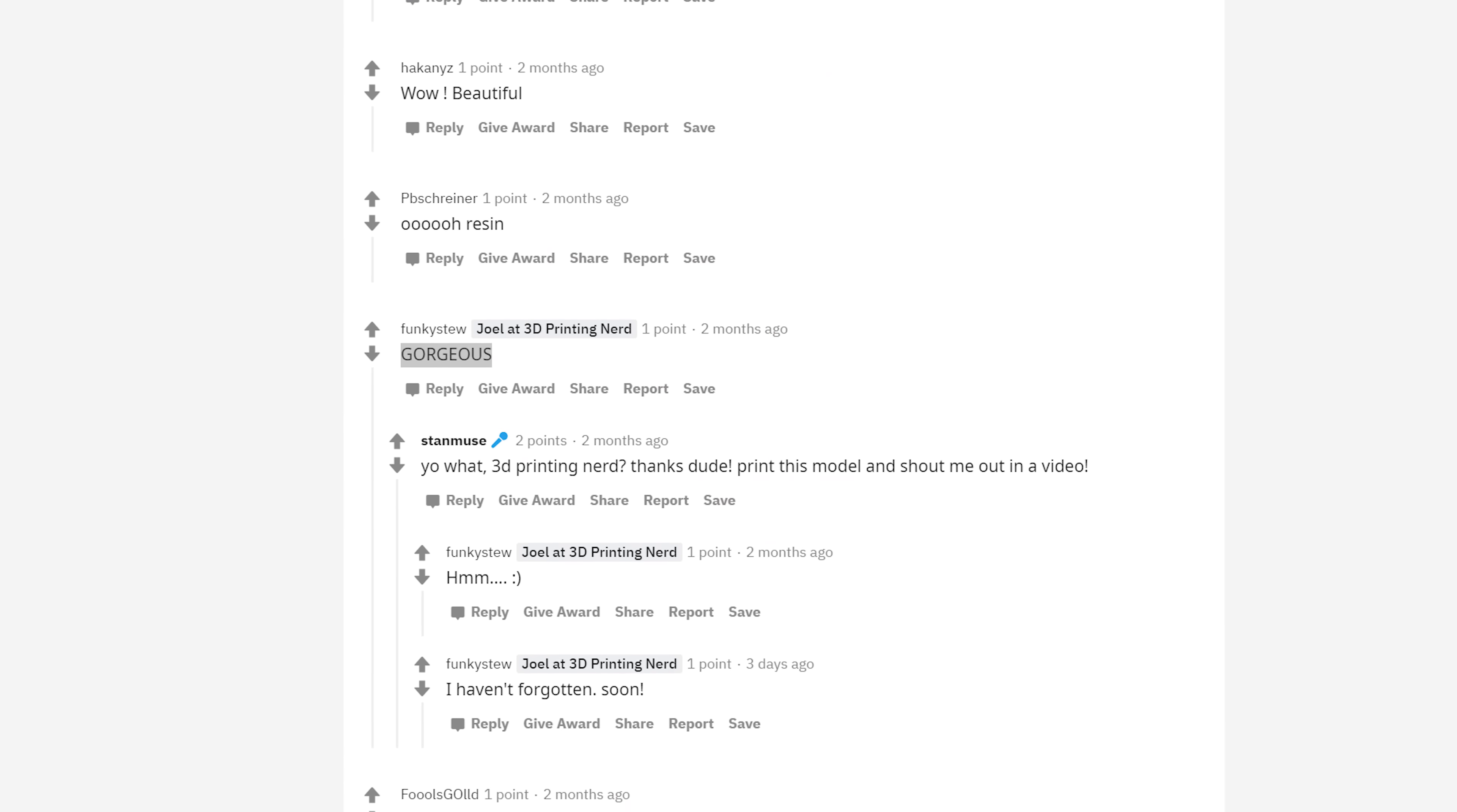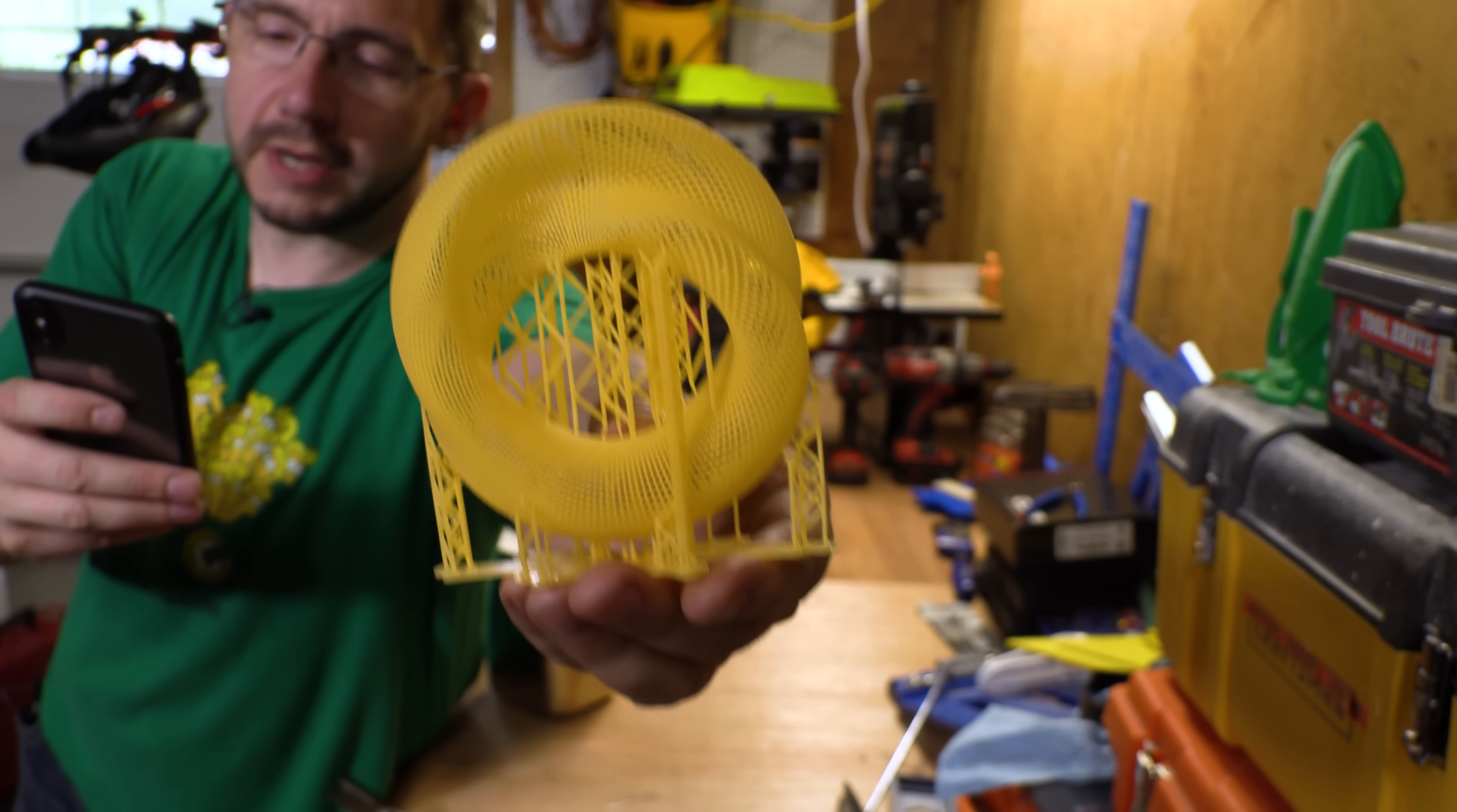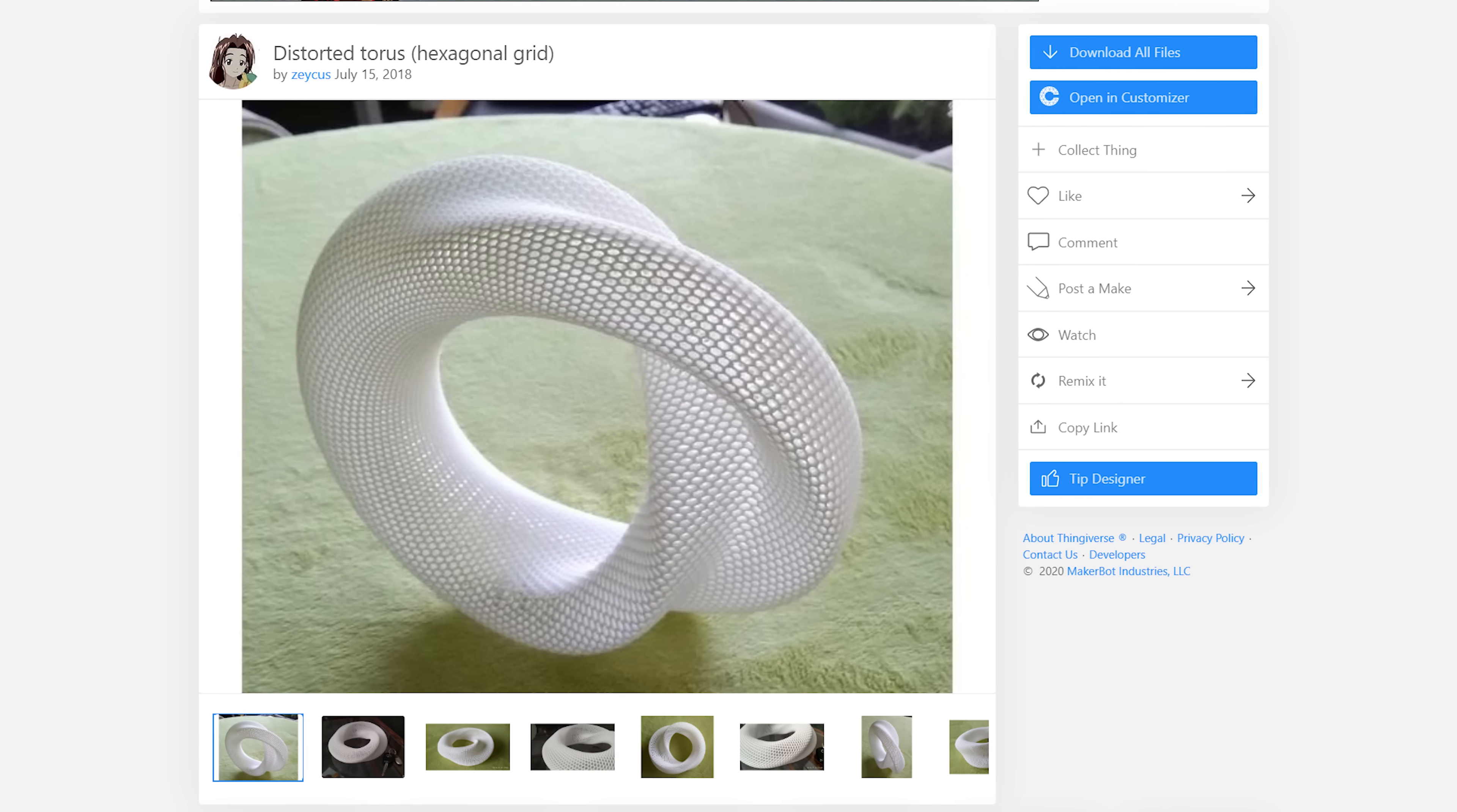It was by someone Stan Muse who said 'yo what 3D Printing Nerd thanks dude, print this model, shout me out in a video.' Stan Muse, what up! This is the Distorted Torus Hexagonal Grid by Zay Kuz on Thingiverse.